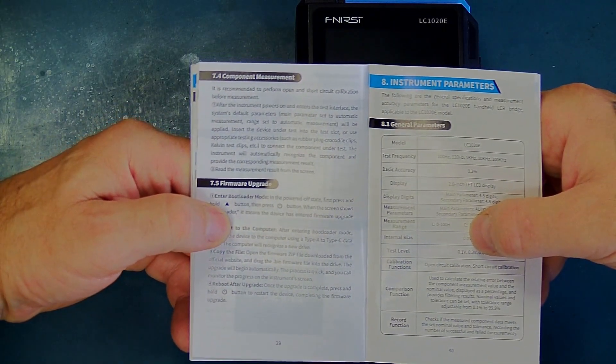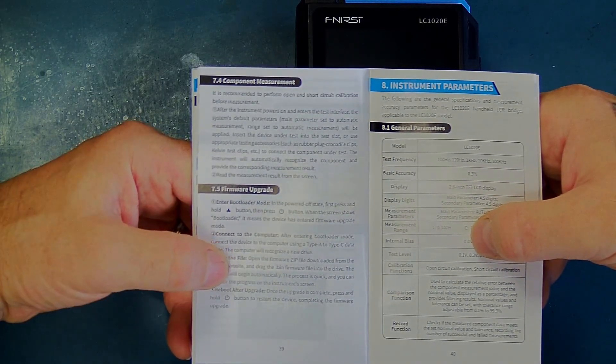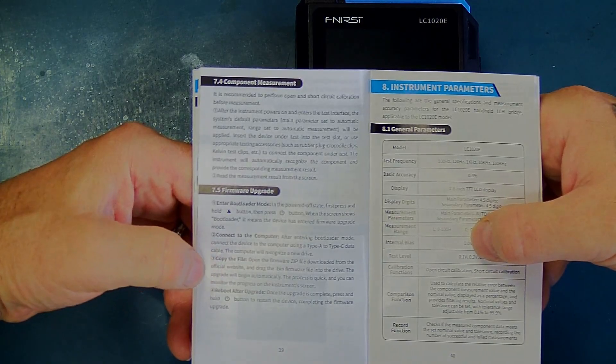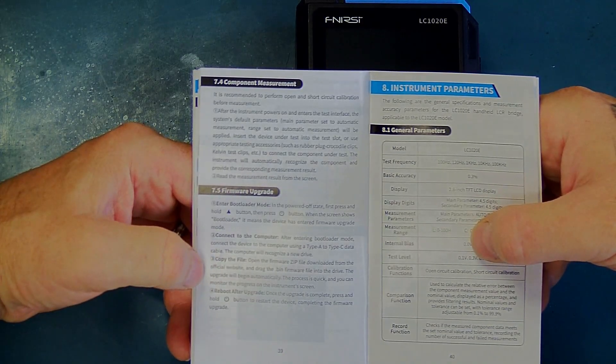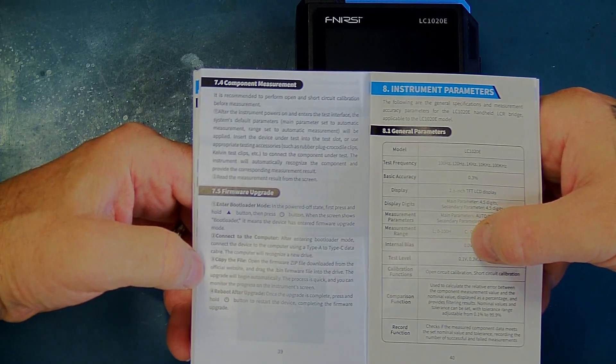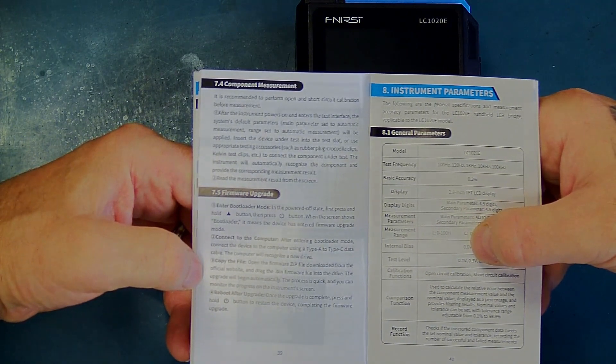We have to press the up arrow button and hold that, then press the power button. When the screen shows 'bootloader,' it means the device has entered firmware upgrade mode. Then we connect it to the computer and it will come up as a drive. We just copy the zip file onto the device—or actually, drag the .bin file onto the device.